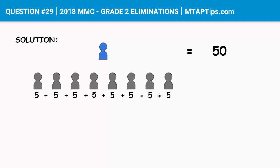Or we can just do 8 times 5 and we'll have 40. So Pete gave away 40 candies to 8 of his friends. Now, to know the number of candies that were left, all we need to do is subtract the number of candies he gave away from the total candies that he had.